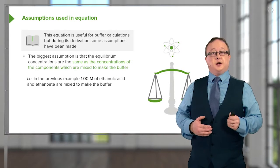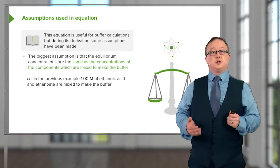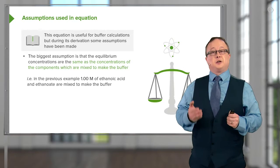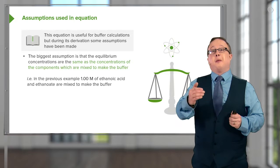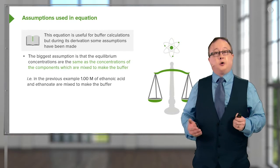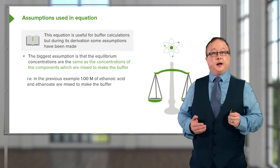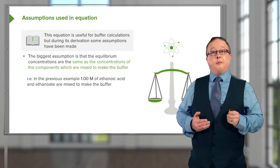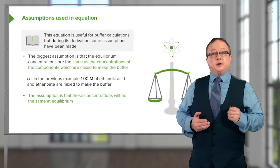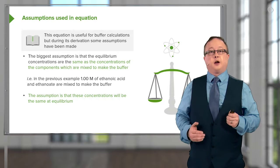The biggest assumption is that the equilibrium concentrations are the same as the concentrations of the components which we mix to make the buffer. In other words, they remain principally unchanged. In the previous example of a 1.00 molar solution of ethanoic acid and sodium ethanoate mixed to make the buffer, the assumption is that the concentrations will be the same in dynamic equilibrium.